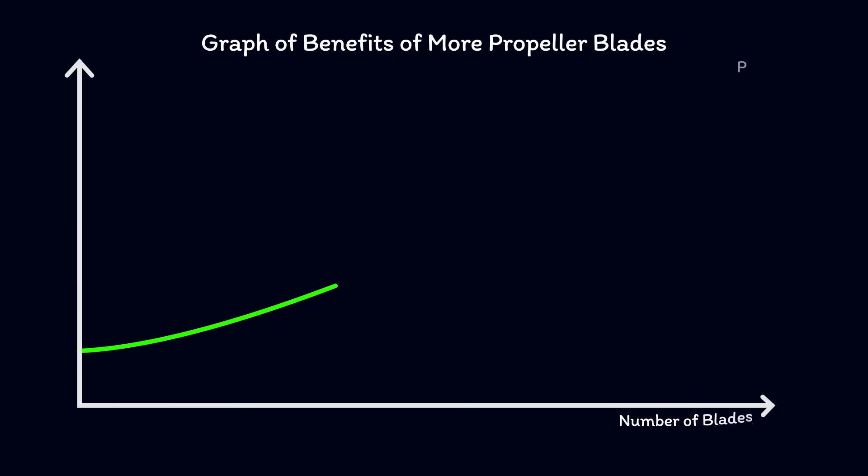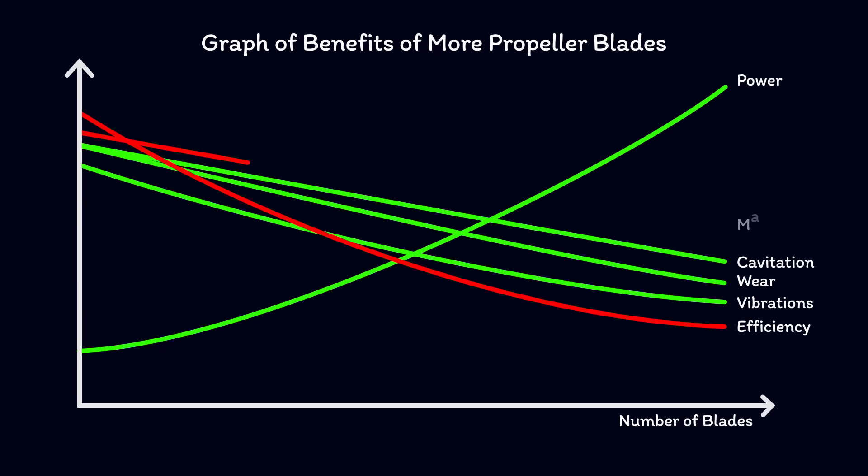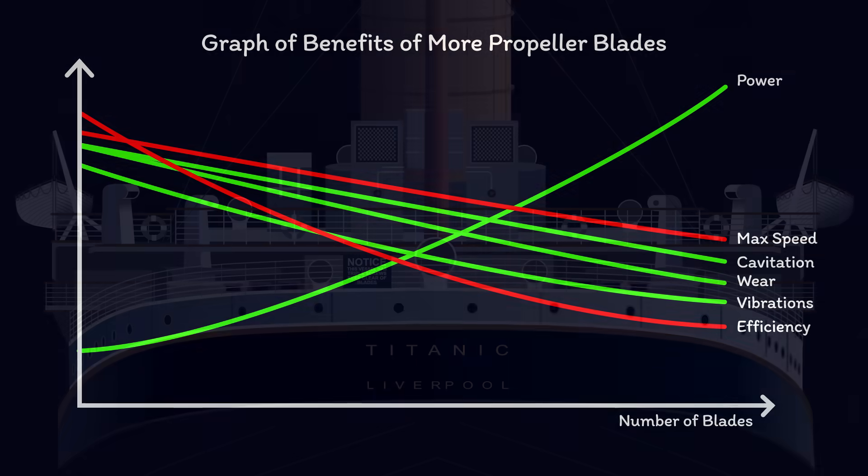More blades equals more power at a given RPM, reduced wear on machinery, reduced ship vibrations, and less cavitation. But it comes at the cost of reduced efficiency and a slower maximum speed for a given engine power.